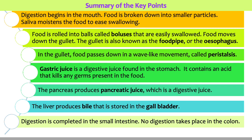Gastric juice is a digestive juice found in the stomach. It contains an acid that kills any germs present in the food. The pancreas produces pancreatic juice, which is a digestive juice. The liver produces bile that is stored in the gallbladder. Digestion is completed in the small intestine. There is no digestion that takes place in the colon.